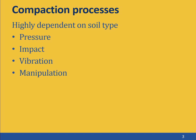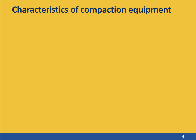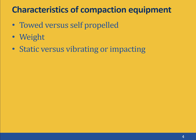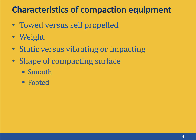For effective and efficient compaction, these processes must be matched to the specific characteristics of the soil being compacted. There are many different types of compaction equipment. They can all be described by certain characteristics: how the compactor is moved (towed or self-propelled), its weight, whether it uses a static, vibrating, or impacting load, and the shape of the compacting surface — either smooth or footed.